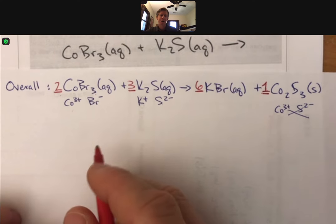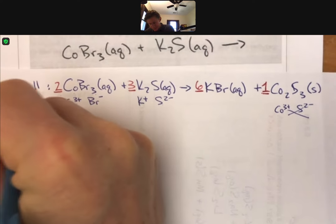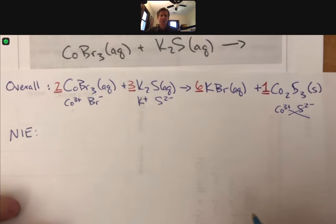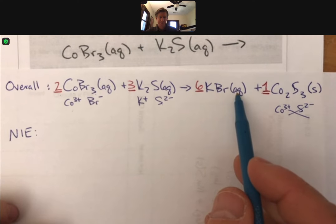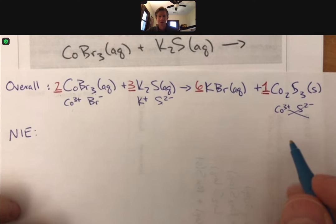Now we're ready to do our net ionic equation. Our NIE, remember, takes anything that's aqueous and breaks it into ions. And anything that's solid, liquid, or gas stays as solid, liquid, or gas. This is going to be quite long because there's a lot of ions. Maybe I'll write a teeny bit smaller here.